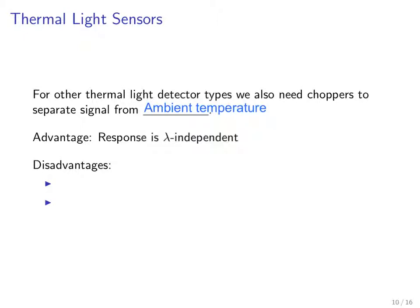The advantage of thermal light detectors in general is that their response is relatively independent of wavelength of light, so you can get a wideband measurement. Disadvantages are that they are slow — because it takes a while for them to heat up in response to a light source — and they can also have low sensitivity, quantified by a relatively low specific detectivity D*.